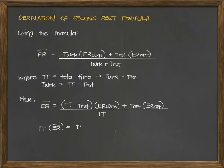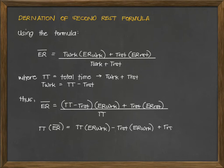Manipulating and simplifying the formula using cross multiplication: total time times ER bar equals total time times ER work minus T rest times ER work plus T rest times ER rest. That is the simplification using cross multiplication and the distributive property for the other side of the equation.